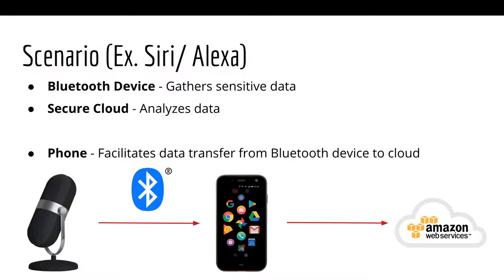A common paradigm we see in IoT applications is what we have here. We have a sensor that's gathering some information and a cloud that's necessary to analyze that. This is true for something like voice assistants, Siri or Alexa. A common third element to these systems is a phone, which mainly facilitates the data transfer from that sensor to the cloud. This is necessary for systems with something like a smart watch, where the watch itself does not have internet capabilities and must go through a phone to get to the outer internet.